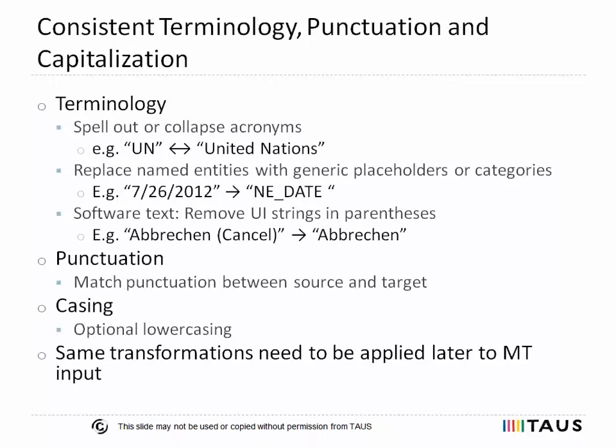Named entities — per Wikipedia — are names of persons, organizations, locations, expressions of time, quantities, monetary values, percentages, etc. Named entities can rarely be translated properly by statistical MT systems. Think, for example, of dates. It is often worth it to replace named entities with generic placeholders using a named entity recognizer. It should be obvious that this replacement also needs to happen when using the trained MT engine. Separate pre- and post-processing components can provide locale-appropriate processing. For the example on the slide, these components could convert the American-style date into the correct value and format of the target locale.